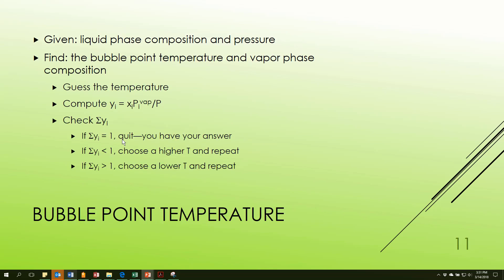The next type of problem is the bubble point temperature. In this case, I'm given liquid phase compositions and pressure. And I want to find the bubble point temperature and the vapor phase composition. Again, I'm going to have to do a trial and error technique. So I'll guess what that temperature should be. Use that to calculate vapor pressures, which allows me then to compute the Y values for every species. Add those up. See if they're equal to one. If they are, you're done. If not, you choose a higher temperature. And if they're greater than one, if the sum is greater than one, then you need to choose a lower temperature. And repeat the process until you find the correct answer.